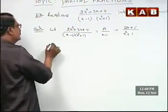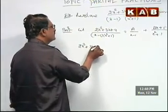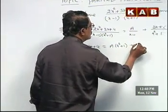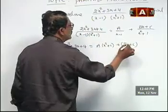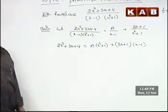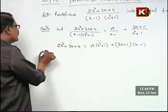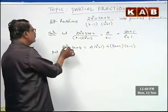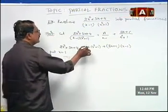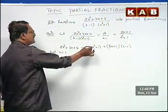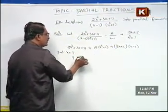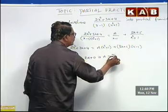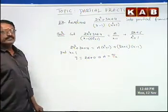Taking LCM on both sides we get 2x square plus 3x plus 4 equals to A into x square plus 1 plus Bx plus C into x minus 1. Now put x equals to 1 on both sides. Substituting x equals to 1, on the left side we get 2 plus 3 plus 4 equals 9. On the right side A into 1 plus 1 equals 2A, and the remaining terms become 0. Therefore A equals to 9 by 2.